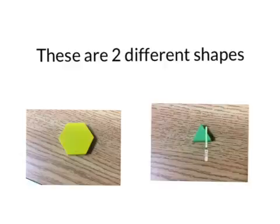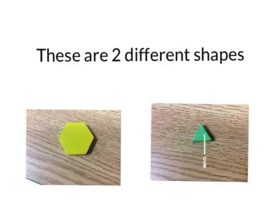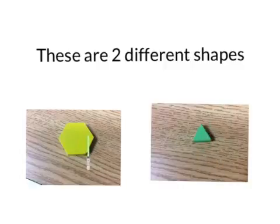The triangle has three vertices, and the hexagon has six vertices. But if you take six of the triangles, you can make a hexagon.